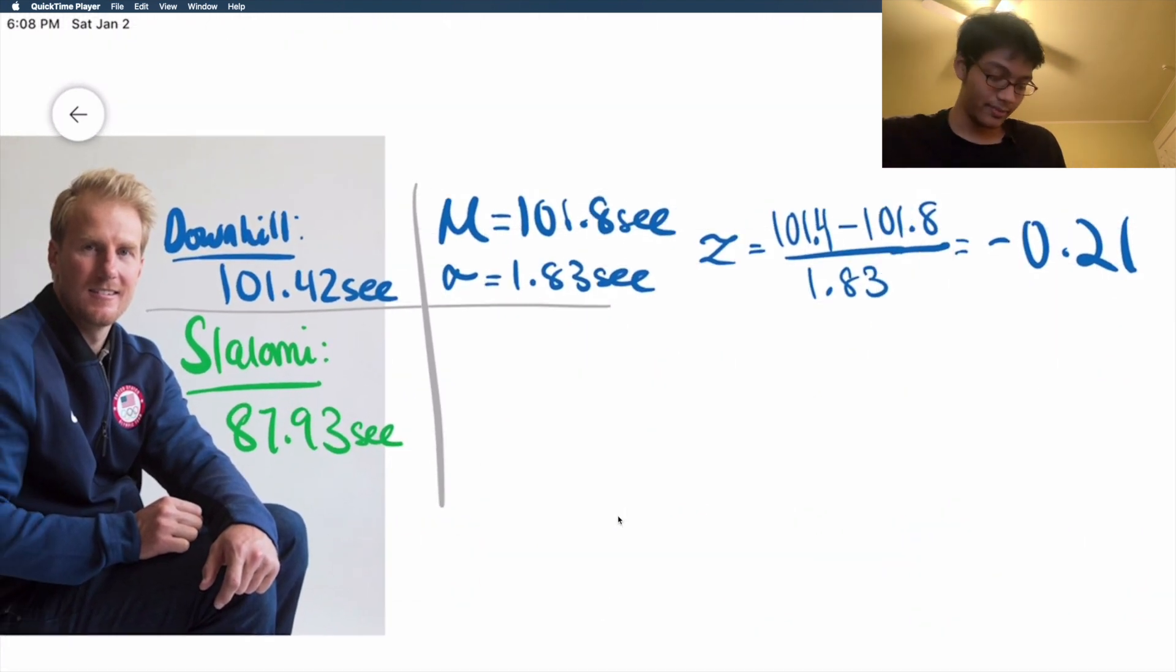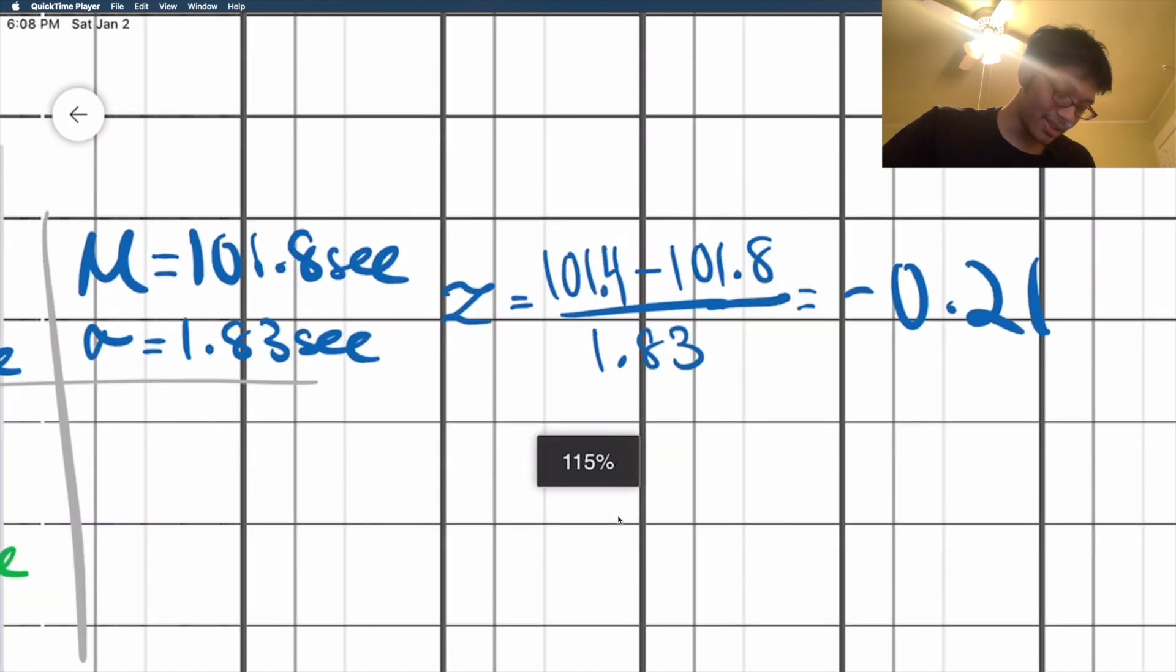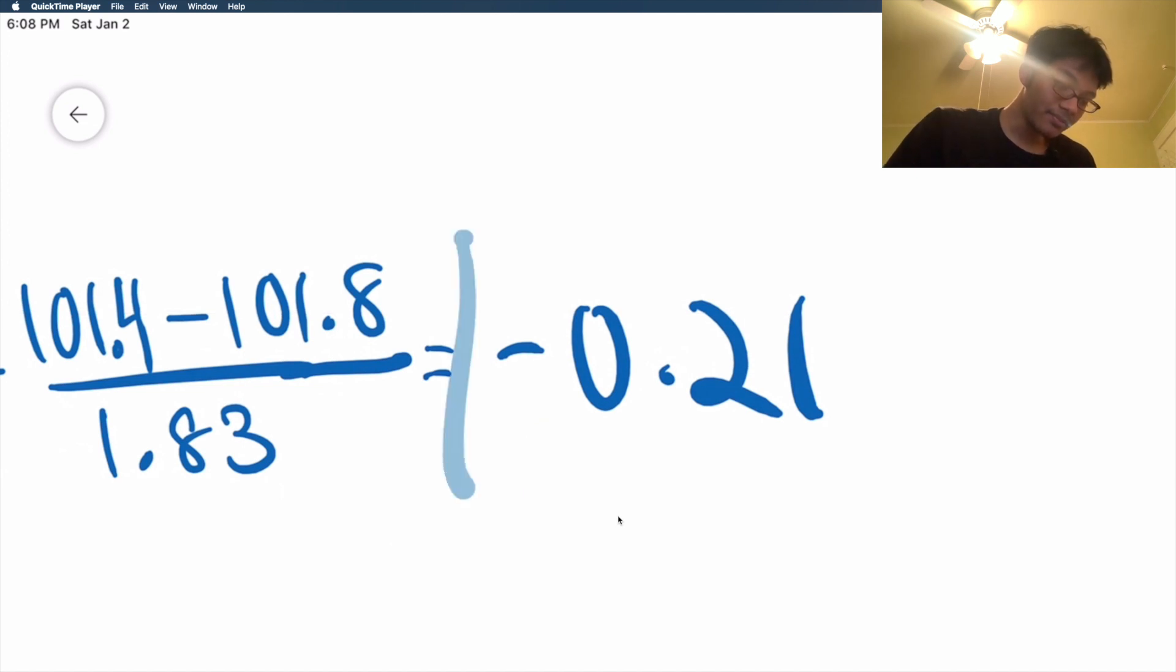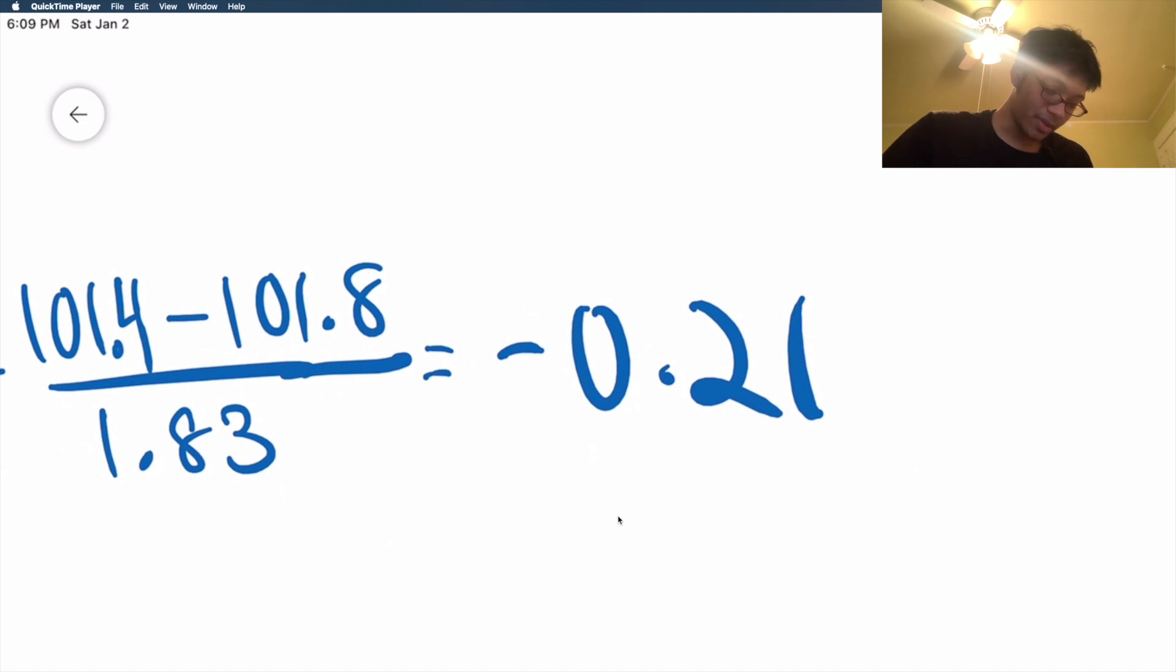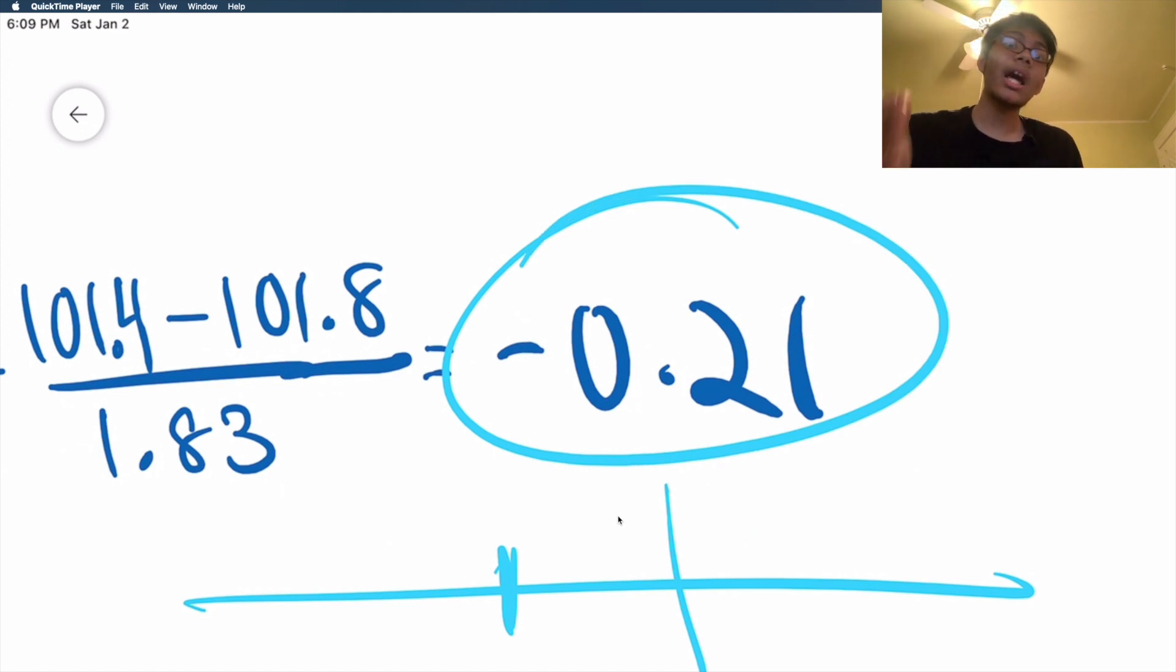So Ted is good. How about for Slalomi? Well, before we get to Slalomi, let me first interpret this downhill z-score for you. What is this actually saying? This is saying Ted is minus 0.21 standard deviations away from the mean. So if most people take 101.8 seconds to do the downhill racing, Ted is around here. Ted is around here because he takes much less time, right? He's minus 0.21 standard deviations to the left of the mean, so he takes less time and therefore he's much better.